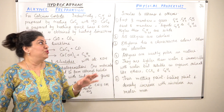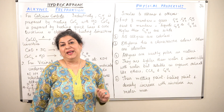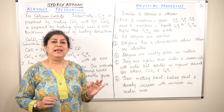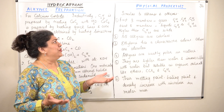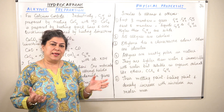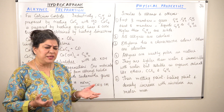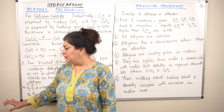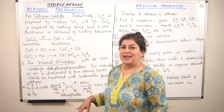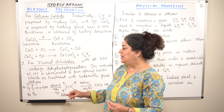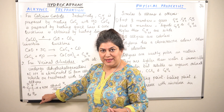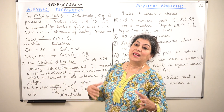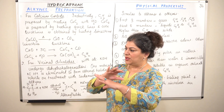Now we come to the physical properties of alkynes. We have studied the physical properties of alkanes and alkenes. Alkynes are pretty much similar to alkanes and alkenes. The only difference is the presence of a double bond in alkenes and a triple bond in alkynes between two carbon atoms; otherwise they are all the same.